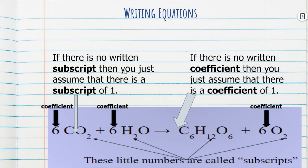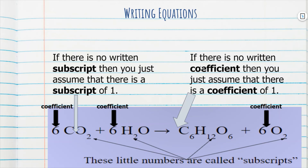If there is no subscript written, you assume there is a 1 there. So if there's nothing by the C, you just assume it's a 1. Nothing by this oxygen — again, assume it's a 1. Same with coefficients: if there is no coefficient written, you assume a coefficient of 1, like in front of the glucose molecule C6H12O6. And just remember: when balancing chemical reactions, you can only change the coefficient — you cannot change the subscript to try to balance them.